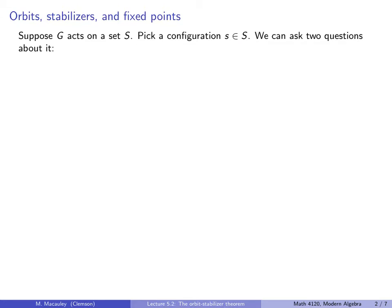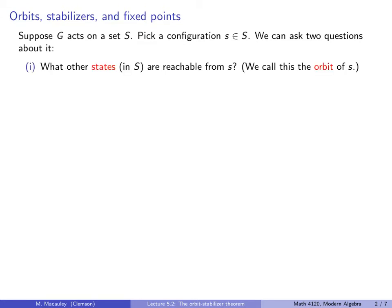There are two natural questions that we can ask about S. First, what other states in our set are reachable from this element little s? We call this the Orbit of S — it's everything that we can get to from that element. Next, what group elements fix little s? We call this the Stabilizer of little s.